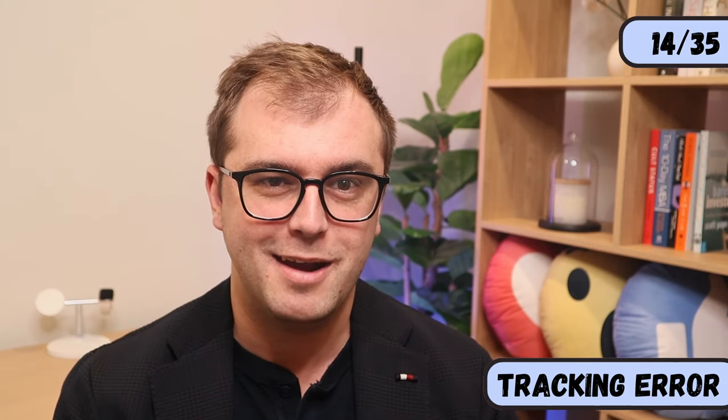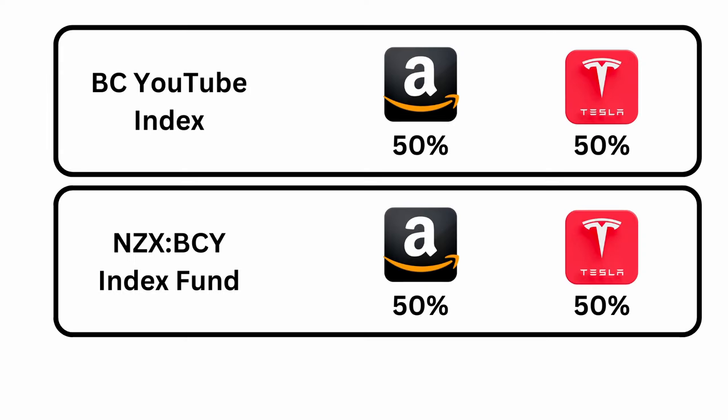The weightings affect the returns of the fund and the index. How closely the performance of the fund matches the index is called the tracking error — the lower the difference, the less tracking error we have. Every so often, an index fund will perform what's called a rebalance, where they buy and sell assets in the fund to realign its proportionality with the index. For example, if an index is 50% Amazon and 50% Tesla, and Amazon's stock rises while Tesla's falls, the fund would sell Amazon stock and buy Tesla stock to rebalance back to 50-50.